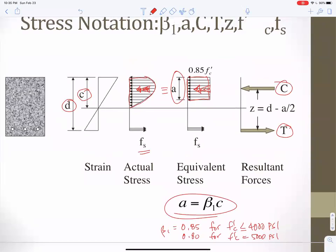That makes the resulting forces in a beam, T and C, and the distance from the middle of that rectangle to the steel is D, the overall depth, minus half the height of the rectangle A over 2, so Z is D minus A over 2.